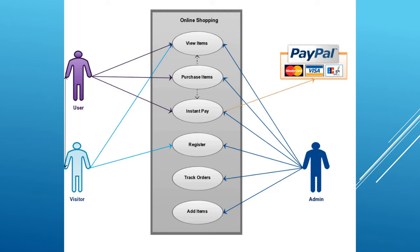Some people don't even move to wishlist or add to cart — they just come and see the application. That's called a visitor. Then we have an admin. Visitors can only view items and register. Admin can view items, purchase items, instant pay, register, track, and add items — those are the things an admin does.